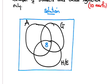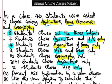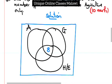We have 8 students choosing all three subjects, so we put 8 in the center. 7 students chose Agriculture and Home Economics only, so I will put 7 in the intersection of Agriculture and Home Economics.